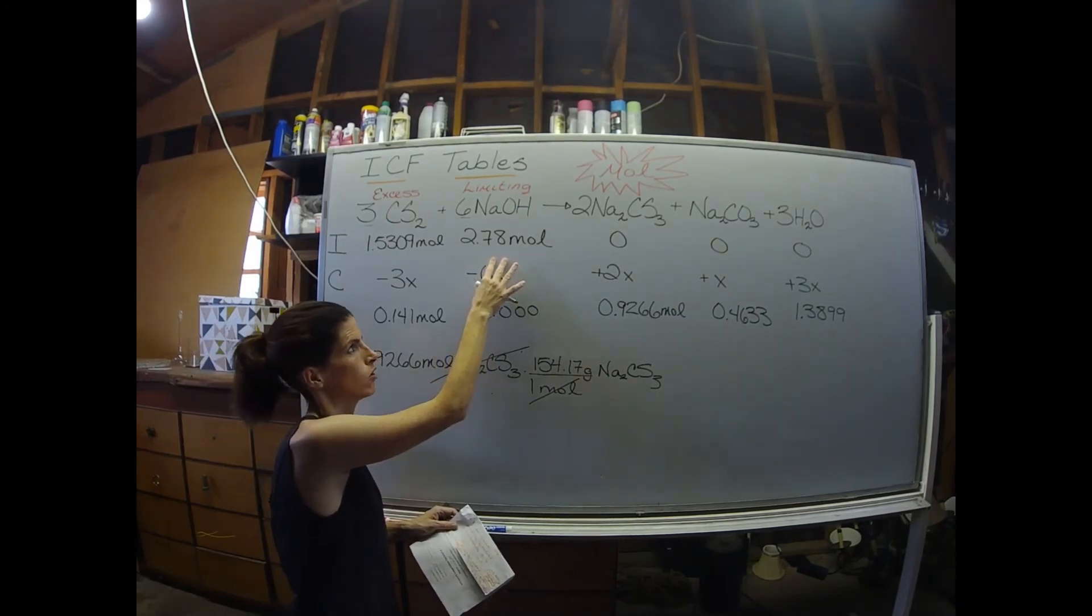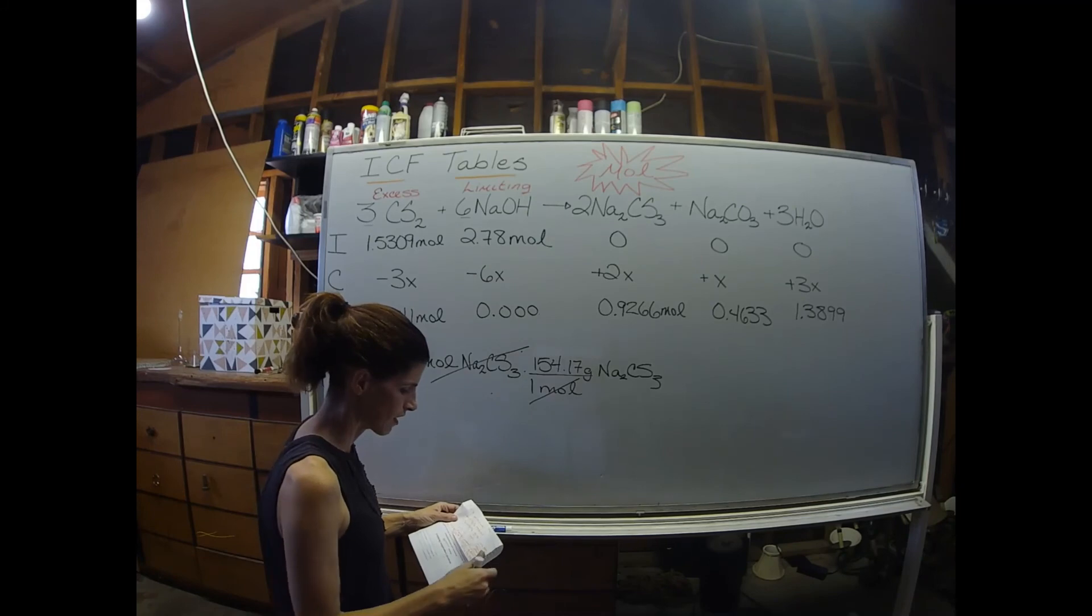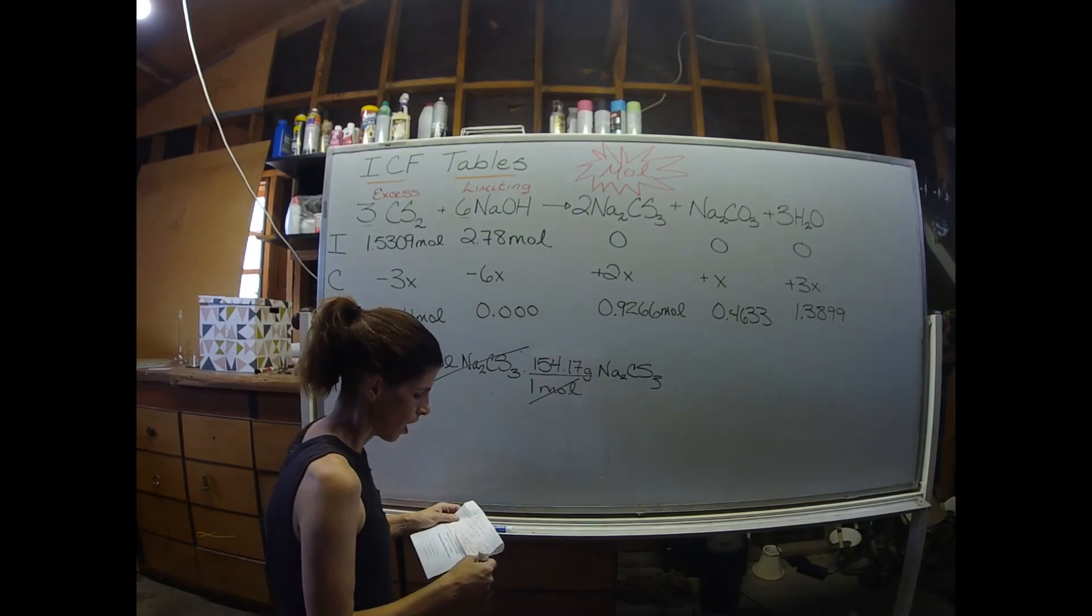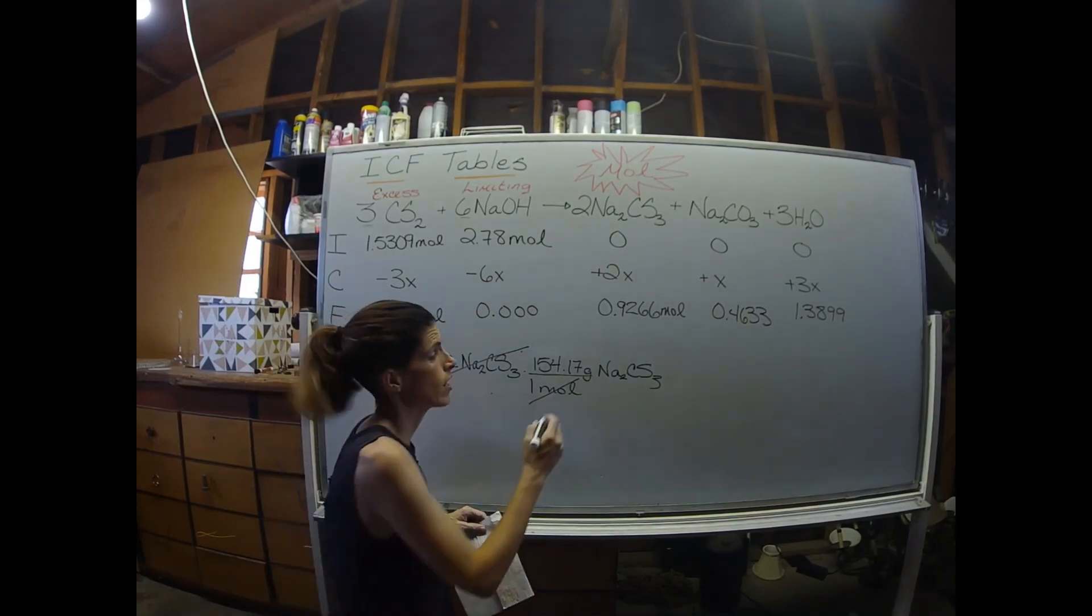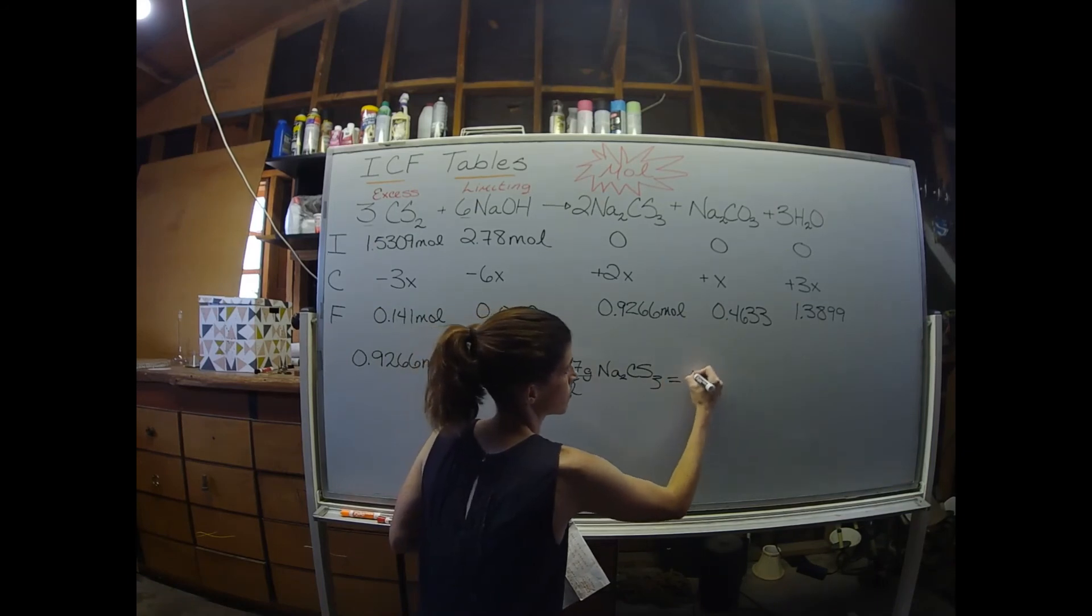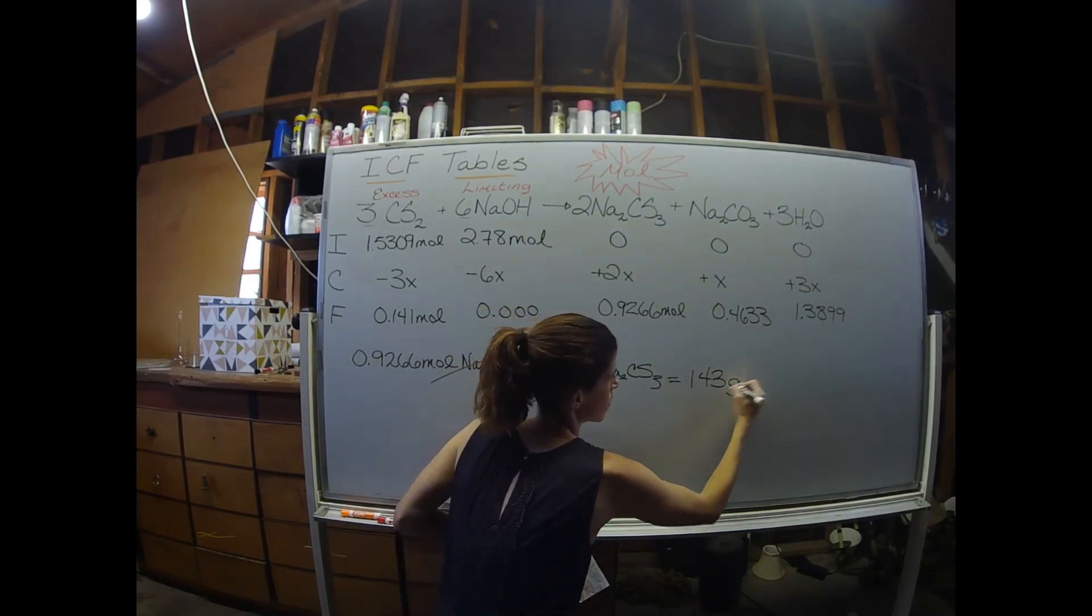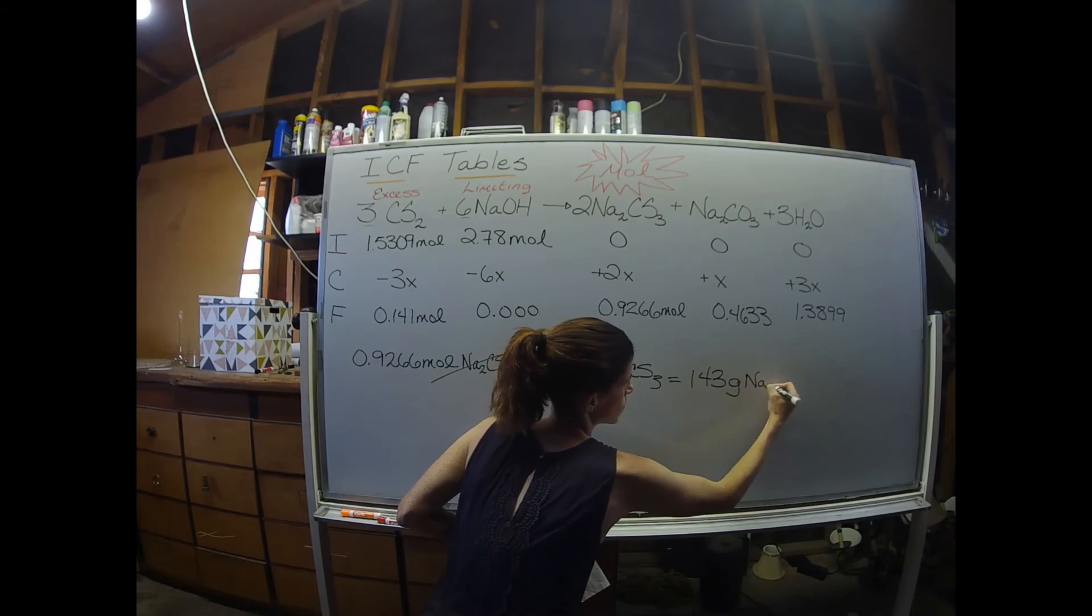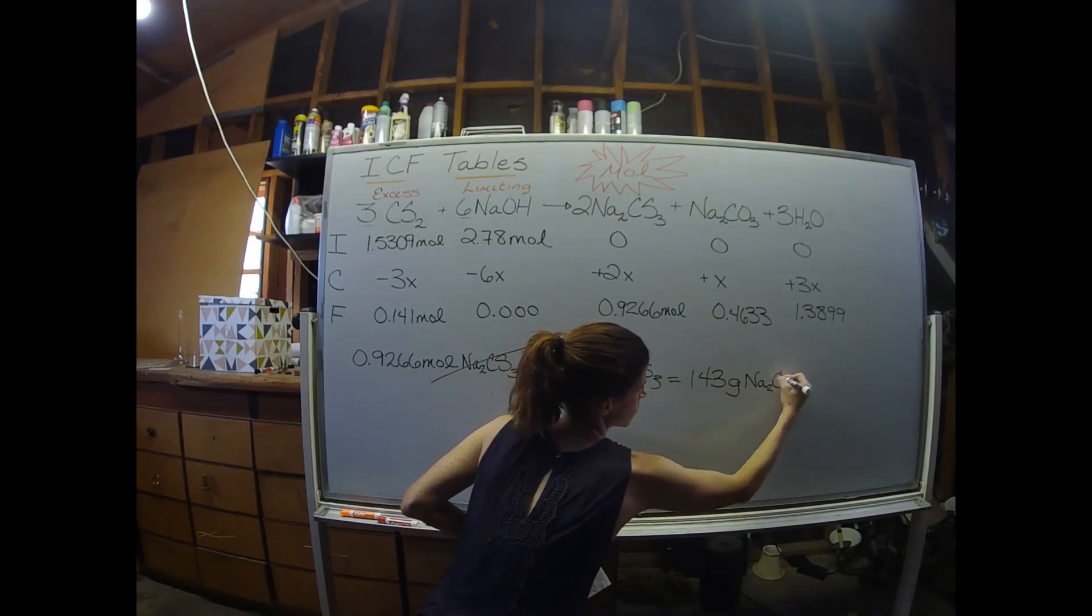After we plug those values in our calculator, and I'm going to go with 3 sig figs because most of the values - the density, the volume, the moles - they all have 3 sig figs. So I got 143 grams of Na2CS3 produced.